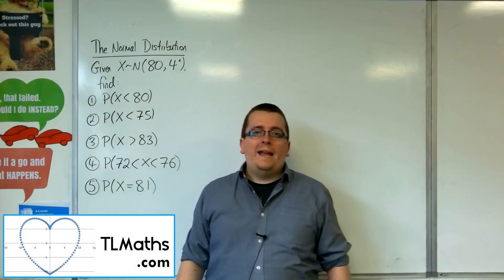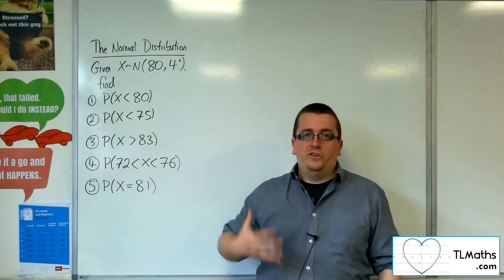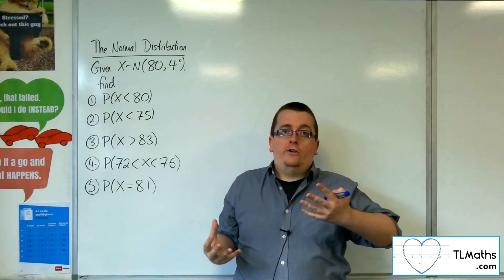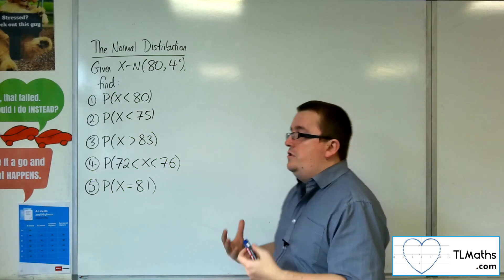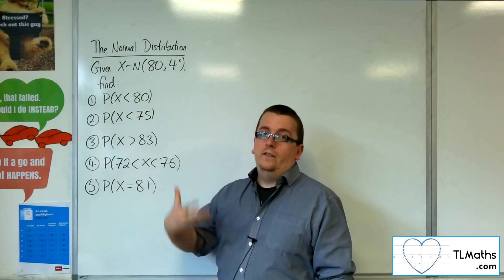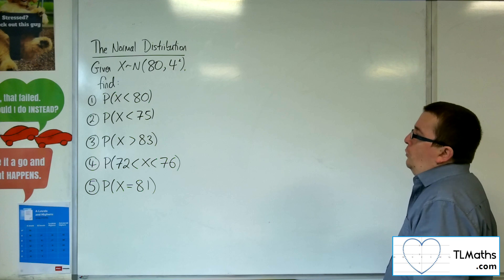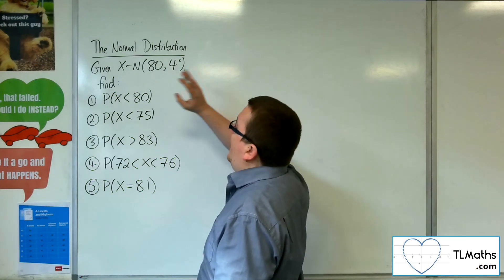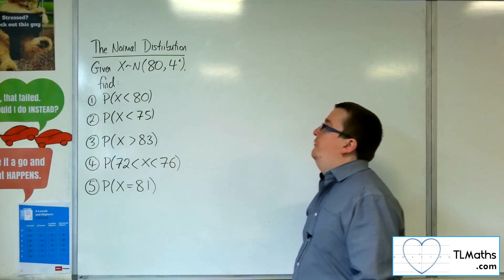In this video we're going to be looking at how to find basic probabilities for the normal distribution. We want to show it using your calculator — how to do it quickly — but also how to use the formula so that you understand what it does and why we use it. We've been given a normal distribution: X is normally distributed with a mean of 80 and a standard deviation of 4.